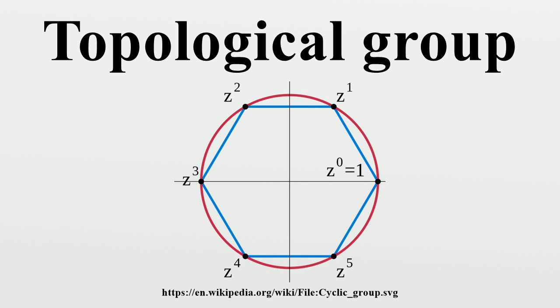the identity component is a closed normal subgroup. This is because if C is the identity component, a*C is the component of G containing a.